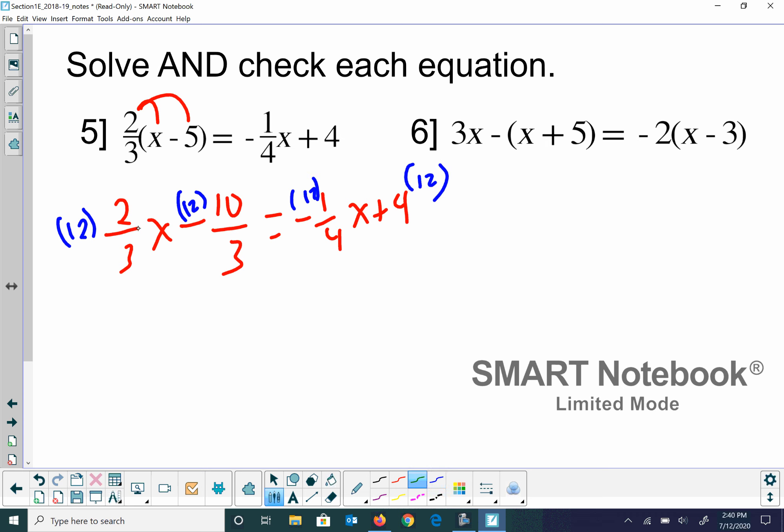And then we go here. So 3 goes in there 4 times. So 4 times 2x is 8x. Minus 3 goes in there 12 4 times. 4 times 10 is 40. And then 4 goes in there 3 times. 3 times negative 3x equals negative 3x. And then 4 times 12 is 48. Let's add this 3x over here. So that's going to give me 11x. We're going to add 40 over here. So that's going to give me 88. Divide each side by 11. So I wind up with 8. So that one worked real nicely. I'm sure if you plugged 8 back in, it would work just perfect.